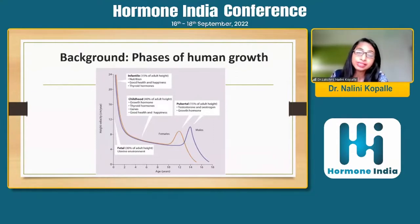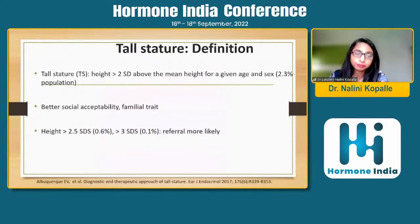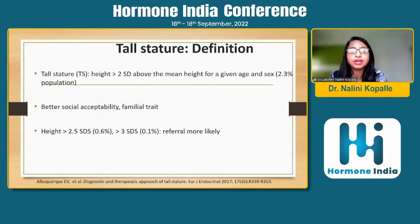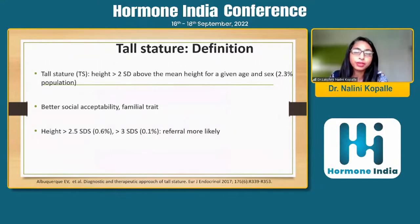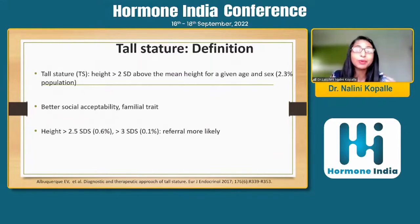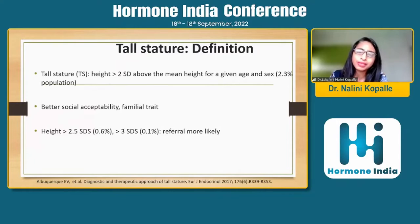These factors can also lead to diseases, both short stature and tall stature. Tall stature is defined as a height more than two standard deviations above the mean height for a given age and sex for the population. About 2.3% of our population has tall stature, but how many do we see in our clinics? Not much — because there's a lot of social acceptability. People almost always want to gain height and don't want to be short, and it is most of the time a family trait.